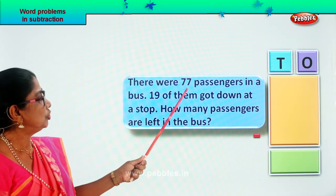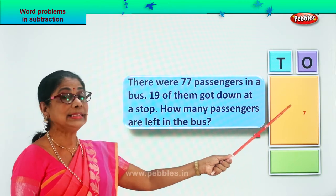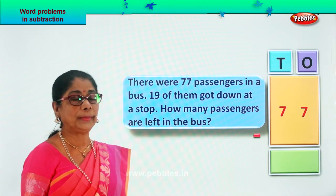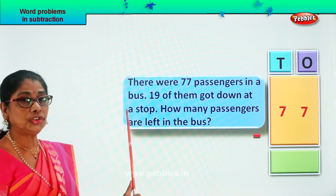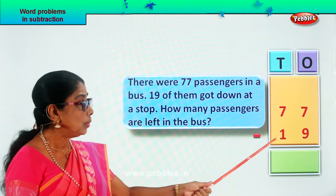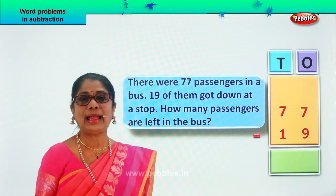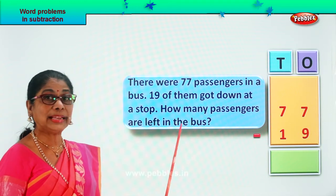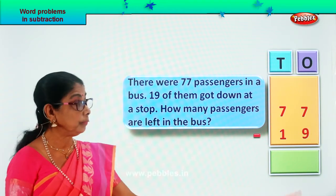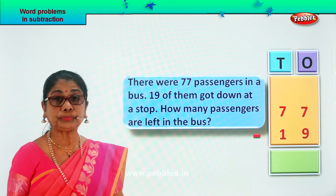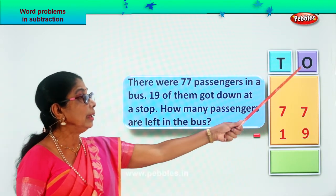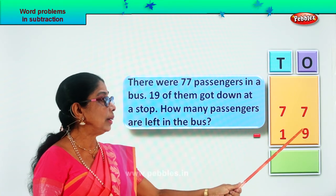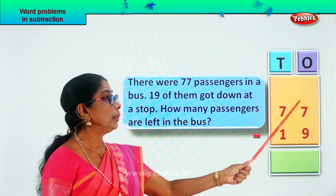Number of passengers in the bus: 77 — that is 7 tens, 7 ones. Number of passengers who got down at a stop: 19 — that is 1 ten and 9 ones. Now let's find out the number of passengers left in the bus. We arrange the numbers: 7 tens, 7 ones minus 1 ten, 9 ones. Now let's work the ones first.